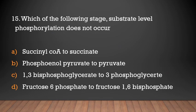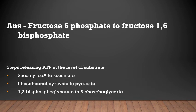At which of the following stages does substrate-level phosphorylation not occur? Phosphoenol pyruvate to pyruvate, 1,3-bisphosphoglycerate to 3-phosphoglycerate, or fructose 6-phosphate to fructose 1,6-bisphosphate? Answer: Fructose 6-phosphate to fructose 1,6-bisphosphate. Substrate-level phosphorylation occurs at succinyl-CoA to succinate, phosphoenol pyruvate to pyruvate, and 1,3-bisphosphoglycerate to 3-phosphoglycerate.